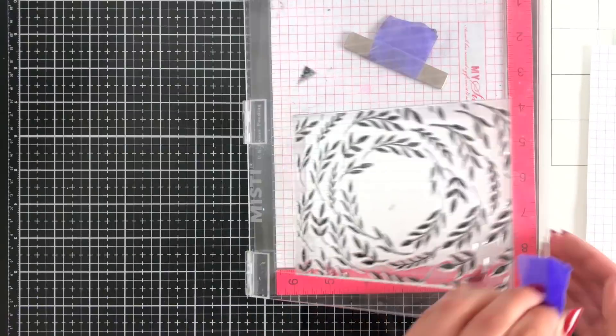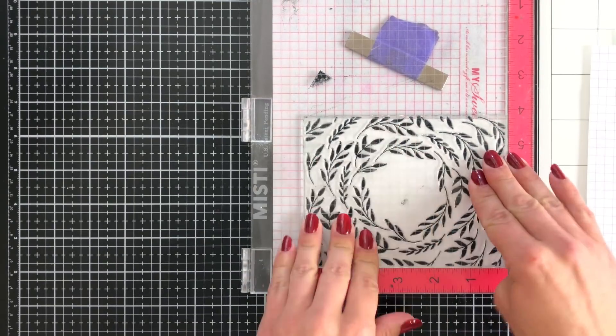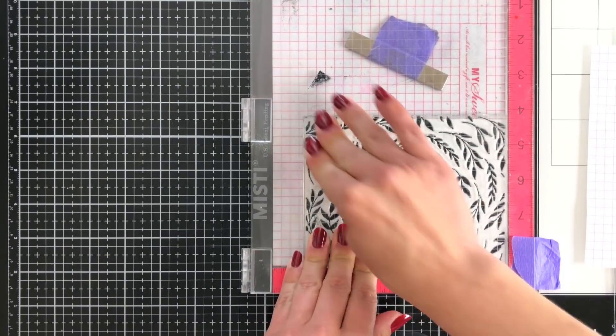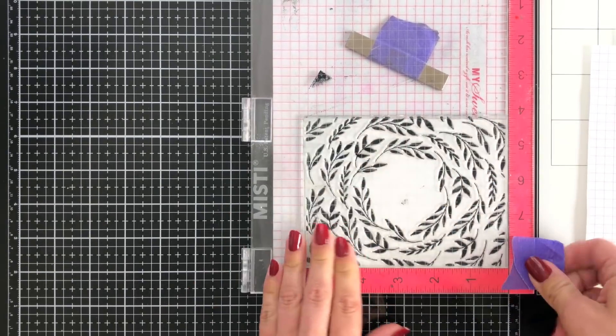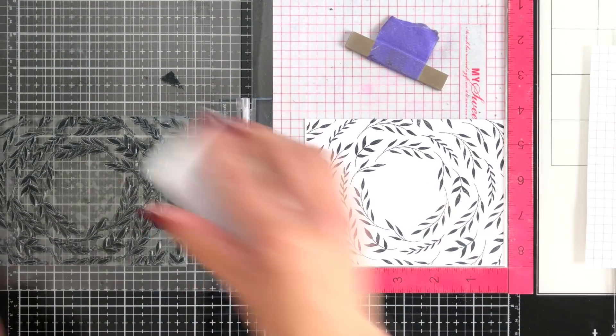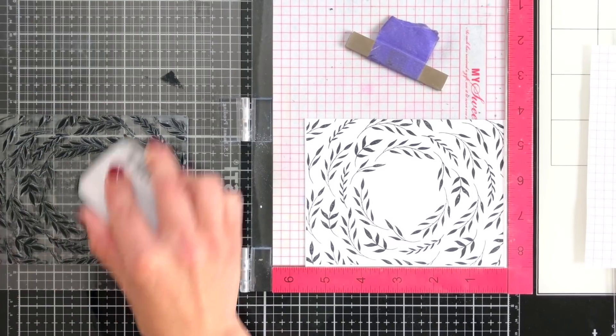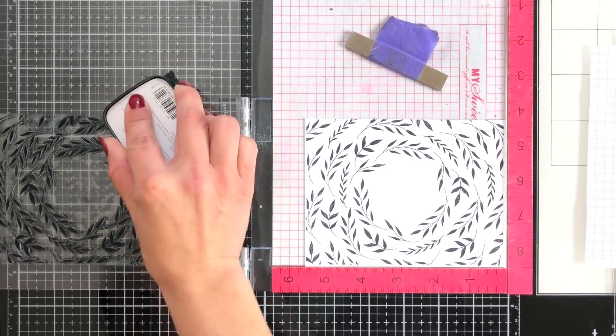I'm just making sure I have that covered everywhere. I'm going to just gently press this down and then I will stamp it again. I just want to make sure it is a really nice crisp black. So I'll go in one more time, make sure my cardstock is still tucked into that corner.